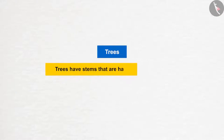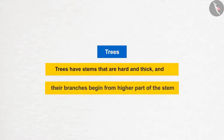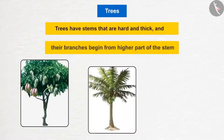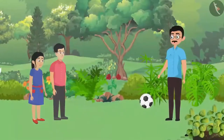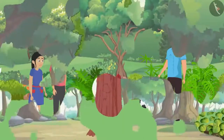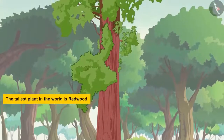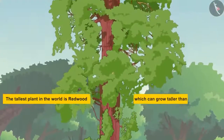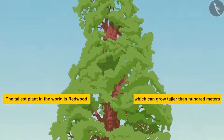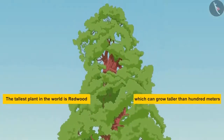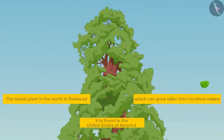The next type of plants are trees. Their stems are hard and thick, and their branches begin from the higher part of the stem. Mango, dates, and coconuts are examples of trees. The tallest plant in the world is the redwood tree, which can grow taller than 100 meters — taller than a 30-floor building — found in the United States of America.